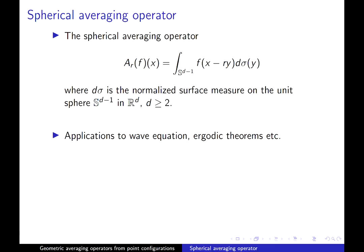Let's start with a very classical geometric averaging operator, namely the spherical averaging operator. What it does is that it takes in a function and replaces the function at a point x by its average over a unit sphere around said point. This type of object arises naturally when you write down the solutions to the wave equation, but also has applications into ergodic theorems and whatnot.